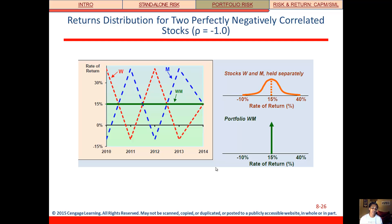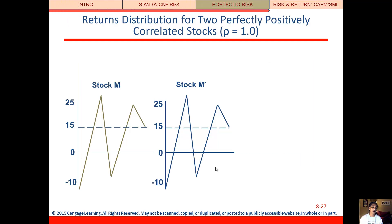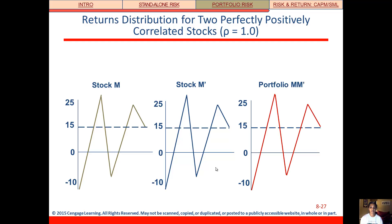Here's an example of two stocks, W and M, that are perfectly negatively correlated. When one is doing well, the other is doing poorly, so they offset each other, and a portfolio would have that green rate of return — exactly in the middle. If they're perfectly positively correlated and move exactly the same, then putting them together you would just see one line, which is what the M-M portfolio looks like.